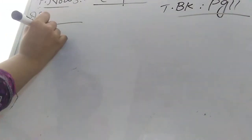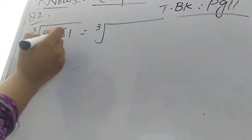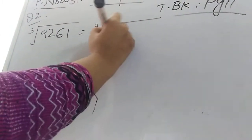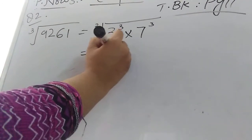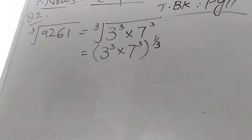In this question the prime factors are already given, so you just need to solve. You have to find the cube root of 9261. Write it as the cube root of its factors: 3 power 3 and 7 power 3. As explained earlier, this cube root symbol means the power 1/3, so write 1/3.